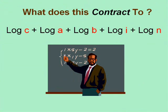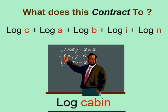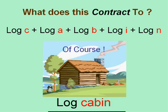What does this contract to? Don't let it scare you. The log of c plus the log of a plus the log of b plus the log of i plus the log of n. This is a classic mathematical problem. Remember what addition becomes? Multiplication. So this long expression actually becomes, well, log cabin. Sorry about that.